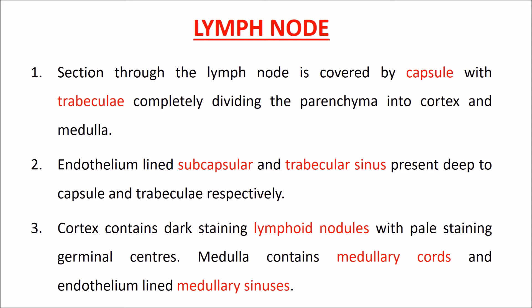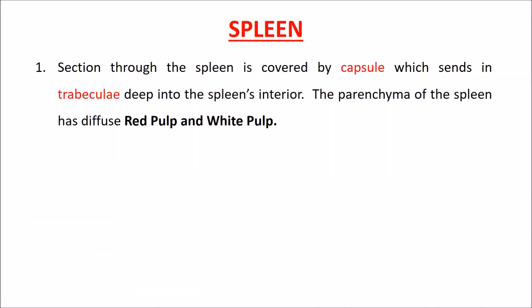The medulla contains medullary cords and endothelium-lined medullary sinuses. Spleen: a section of the spleen is covered by a capsule which sends trabeculae deep into the spleen's interior.